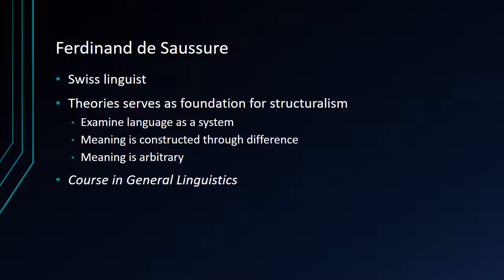Some basic points that Saussure put forward were that we have to examine language as an entire system — not words individually, but the whole system together — and that meaning is constructed through difference in language, and that meaning is arbitrary. His most important work, published after he died, was the Course in General Linguistics, where he lays out many of these and other elements of his linguistic theory.